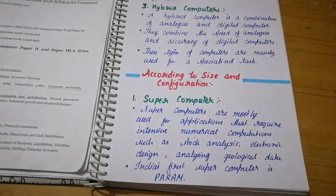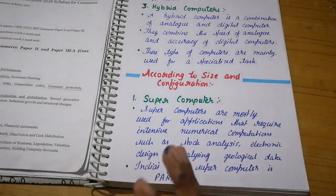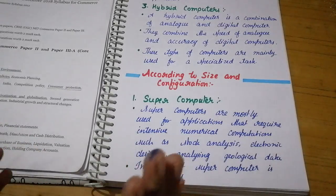Supercomputers are mostly used for applications that require intensive numerical computation such as stock analysis, electronic design, and analyzing geographical data. India's first supercomputer is PARAM. This question often comes in MCQs. Supercomputers handle a lot of work together, processing very large amounts of data.